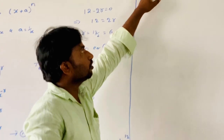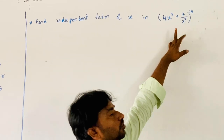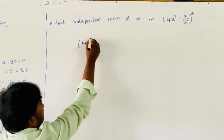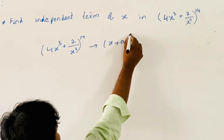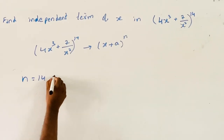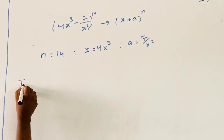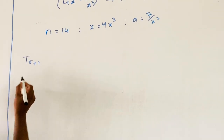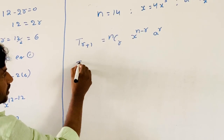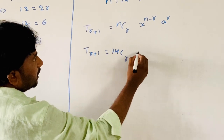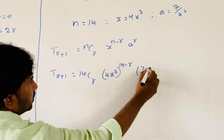Now for another example: find the independent term of x in the expansion of (4x³ + 7/x²)^14. Comparing with (x + a)^n, here n = 14, x corresponds to 4x³, and a = 7/x². The general term of binomial (x + a)^n is T(r+1) = nCr · x^(n−r) · a^r. Substituting: T(r+1) = 14Cr · (4x³)^(14−r) · (7/x²)^r.